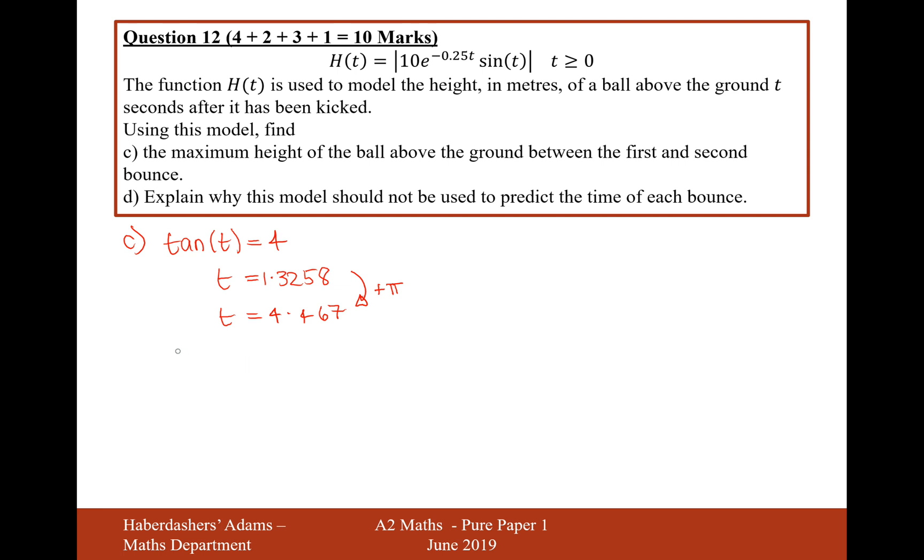So to find the maximum height, I'm going to take this value for t and plug it into the function h of t. It's probably going to give you a negative out, but I'm just going to modulus it, so it's going to be the modulus of 10, e to the minus 0.25 times 4.467 times sine 4.467.